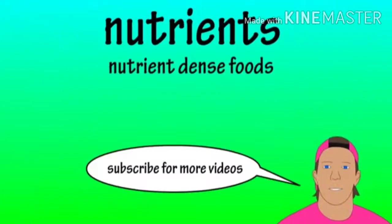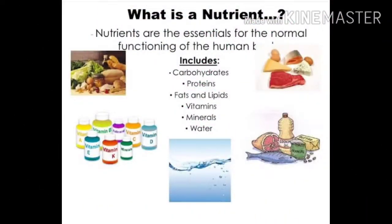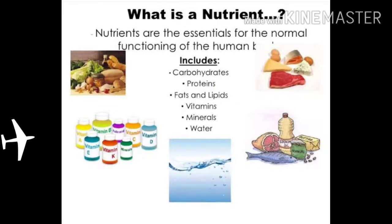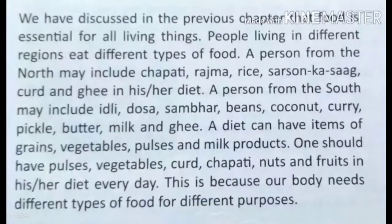And that is the basics on nutrients. In the video, we saw what nutrients are. Now in the picture, we see that nutrients are essential for the normal functioning of the human body. Nutrients include carbohydrates, proteins, fats and lipids, vitamins, minerals, and water. Now see the next picture.